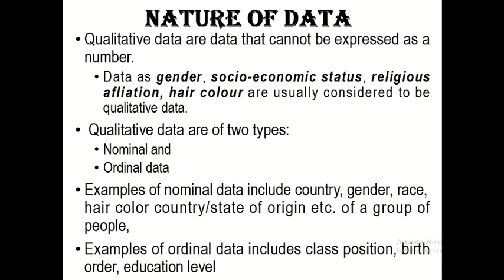When you talk about qualitative or categorical data, you are talking about data that cannot be expressed as numbers. When we attach numbers to them for the sake of measurement, the numbers are just for the purpose of identification or making an order. Examples of qualitative data include gender, socioeconomic status, religious affiliation, and hair color. Qualitative data can be divided into two types: nominal and ordinal.